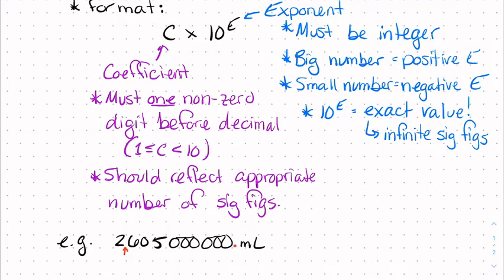Figuring out the exponent is essentially how many places are you moving the decimal to get it where you want it to go. It's not written in here, but if we were to put a decimal point in this number, it would go at the end.